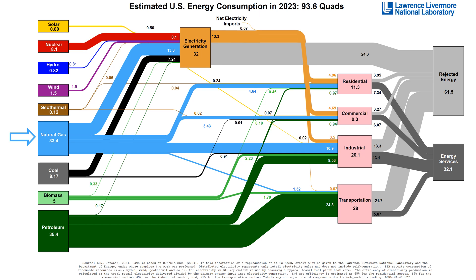Natural gas is getting split more evenly among its end-uses. A large fraction goes into industry for direct process heating, and a lot of the nation's homes and office buildings are heated with natural gas, so you'll see a portion going into residential and commercial. A growing portion of natural gas is also going into electricity generation. Renewable energy sources — solar, hydro, wind, and geothermal — are predominantly being used for electricity generation, though a small portion goes to other end-uses, like geothermal being captured for heating buildings.